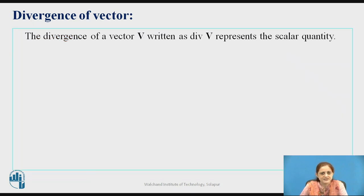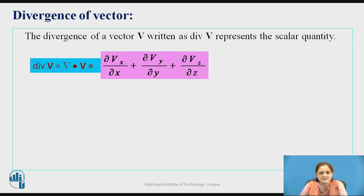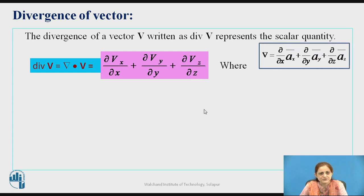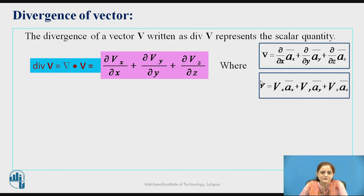The divergence of a vector V is a scalar quantity. The divergence of V equals the dot operation between the del operator and V, and can be written as: (∂v_x/∂x) + (∂v_y/∂y) + (∂v_z/∂z). The del operator represents partial differentiation in the Cartesian coordinate system with respect to x, y, and z, and the unit vectors are also considered. The vector V is: v_x â_x + v_y â_y + v_z â_z.